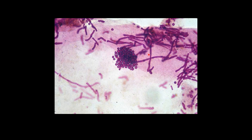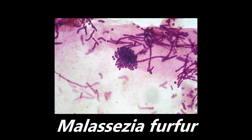More high-yield histology: we see some elongated structures in the top right-hand corner and some ball-like structures in the middle. What we're looking at is Malassezia furfur. This is the classic spaghetti and meatballs appearance — the elongated structures are your spaghetti, and the rounded structures are your meatballs. This is seen on a KOH prep under microscopy. If you see elongated structures with rounded meatball-like structures, think Malassezia furfur.